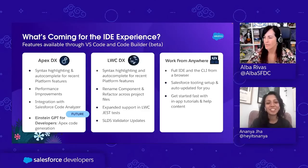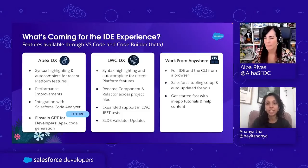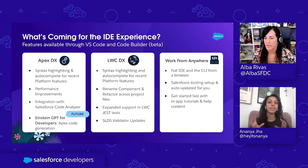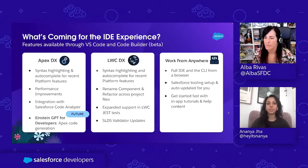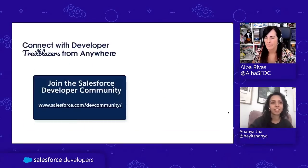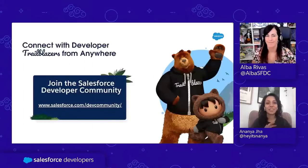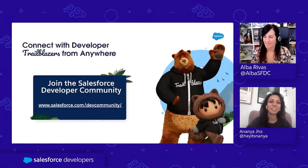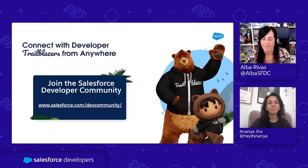For the Code Builder roadmap — as mentioned, we are aiming to go GA around Winter '23, later this year. We are focusing on making sure that you are able to access the full IDE experience and the CLI right there in your browser. The focus will be to ensure that you are able to get started quickly without needing to do any of those typical setup steps that you'd otherwise have to do.